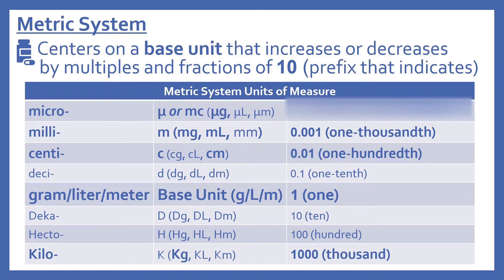I've put in bold here the ones that are most commonly seen in pharmacy: microgram, which is abbreviated with the lowercase Greek letter mu or mcg; milligram, which is mg; milliliter, which is ml; centimeter, which is cm; and kilogram, which is kg.